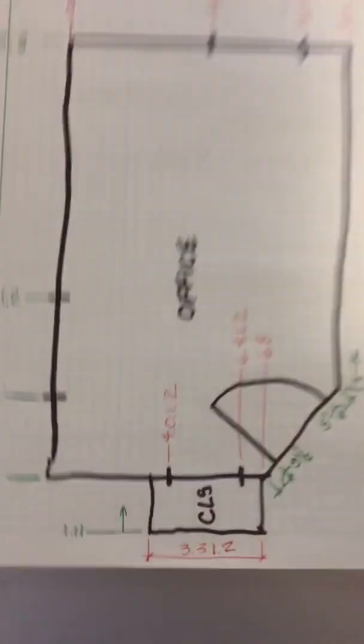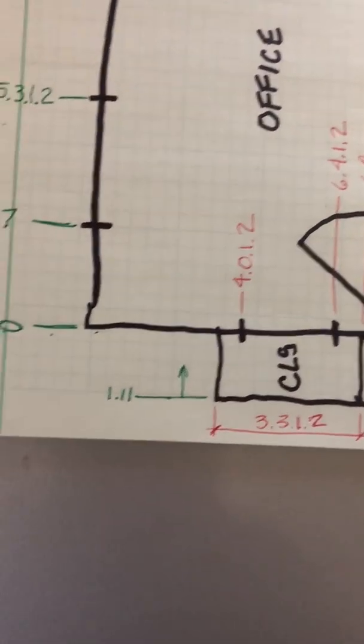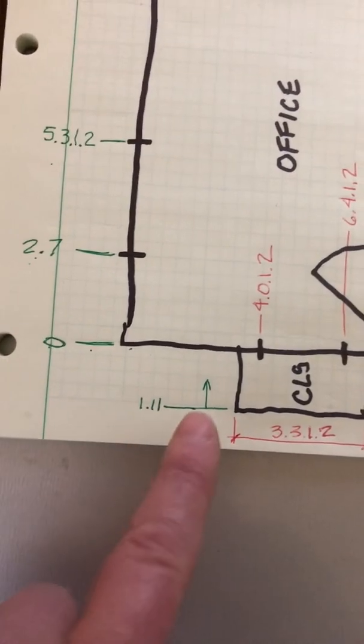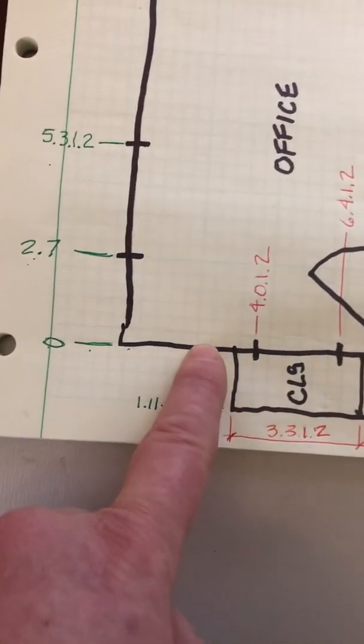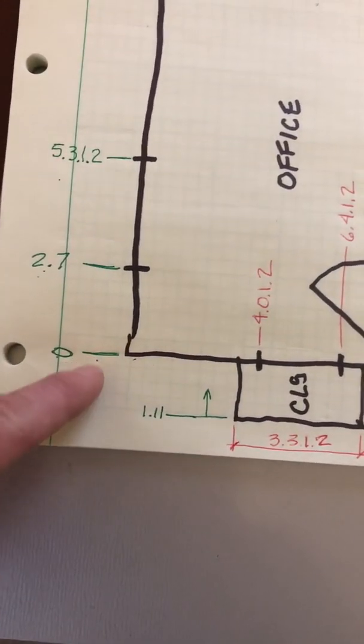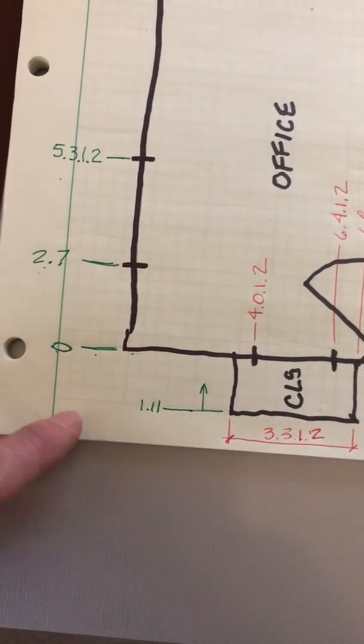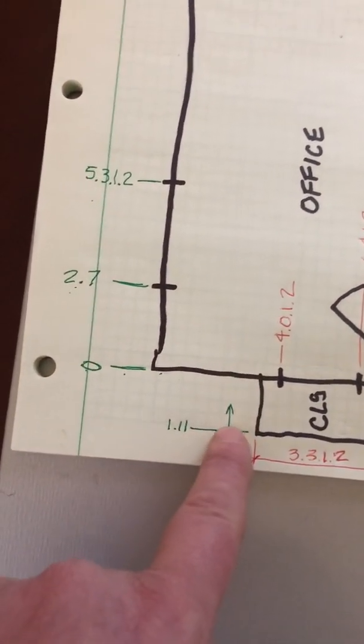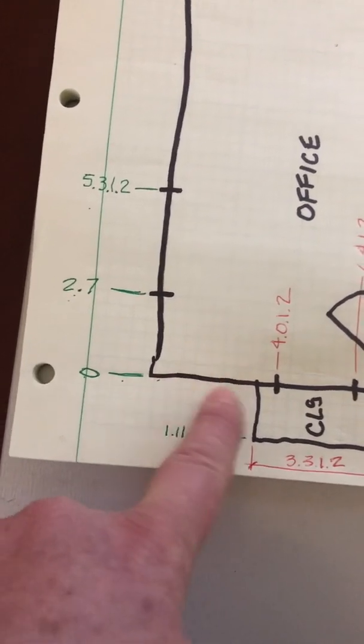Same thing with this one here for the depth of the closet. I technically didn't have to put an arrow here, but I'm going in the opposite direction of the zero in this case, so I just wanted to make it clear that this is being measured to that face of that wall.